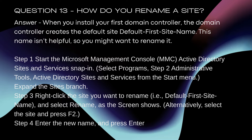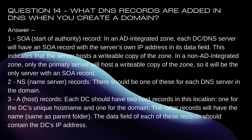This name isn't helpful, so you might want to rename it. Step 1: Start the MMC Active Directory Sites and Services snap-in, select Programs. Step 2: Administrative Tools > Active Directory Sites and Services from the Start menu, expand the Sites branch. Step 3: Right-click the site you want to rename — that is, Default-First-Site-Name — and select Rename, as the screen shows. Alternatively, select the site and press F2. Step 4: Enter the new name and press Enter.